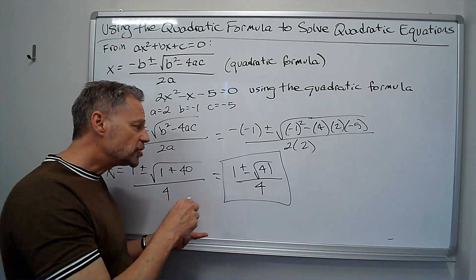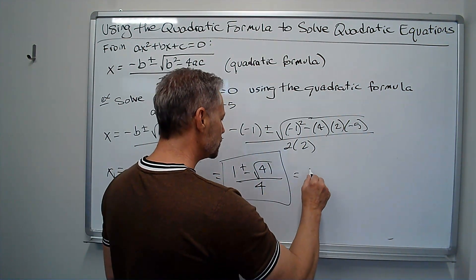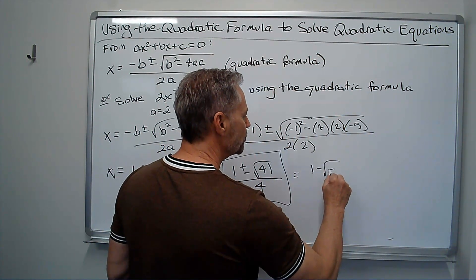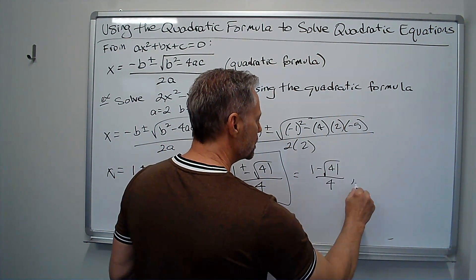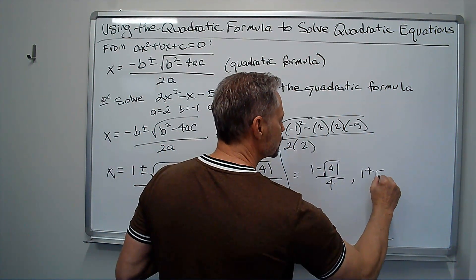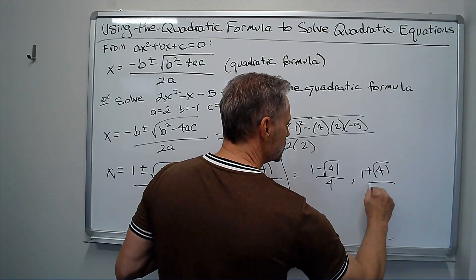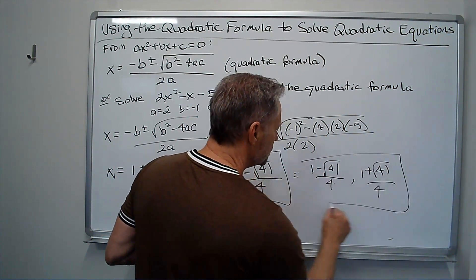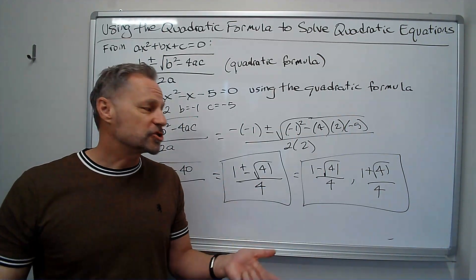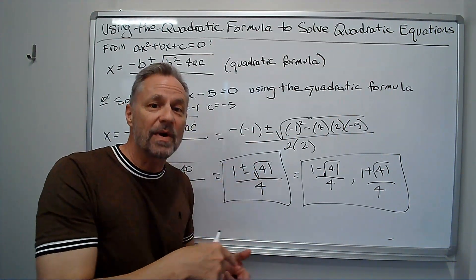Your instructor may want two separate answers, so you would write it as 1 minus the square root of 41 over 4, comma, 1 plus the square root of 41 over 4. So obviously, however your instructor wants you to write it, write it that way so you get full credit.